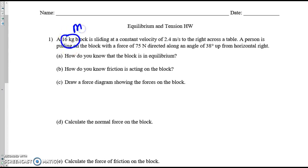A 16-kilogram block has a constant velocity as it slides to the right. The person is pulling on the block with 75 newtons at this angle. How do you know the block is in equilibrium? It's these magic words: constant velocity. It doesn't even matter how fast it is. If the velocity is not changing, if there's no change in the motion, there is not an unbalanced force.